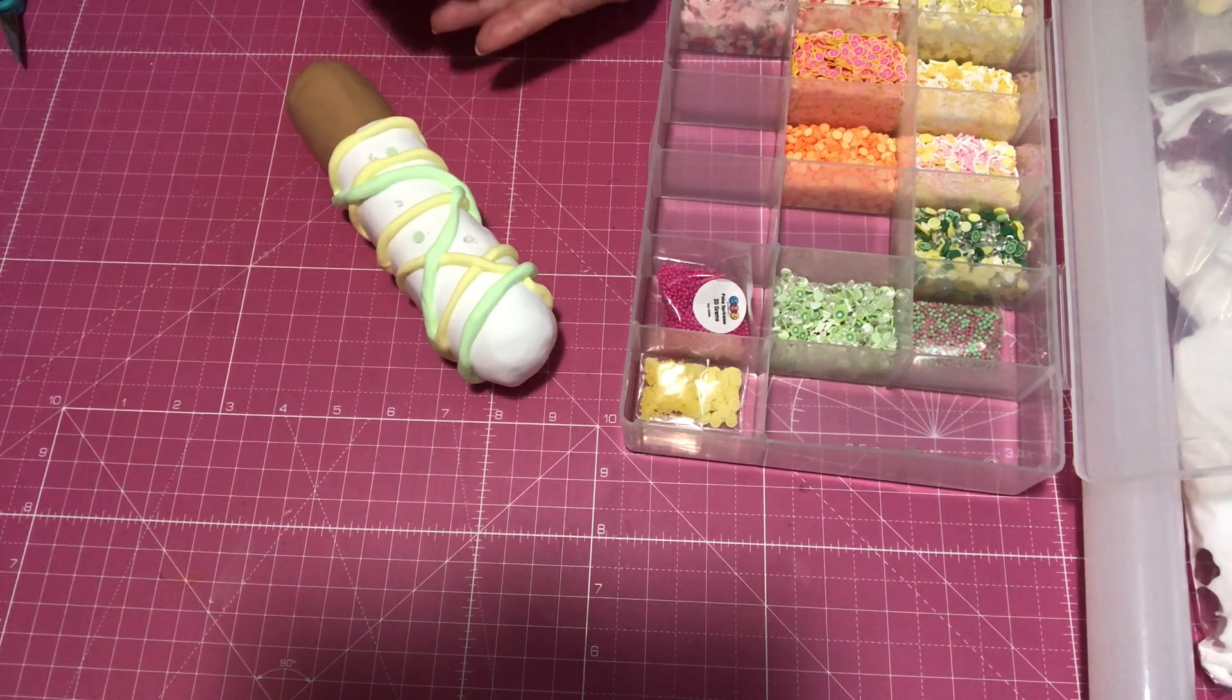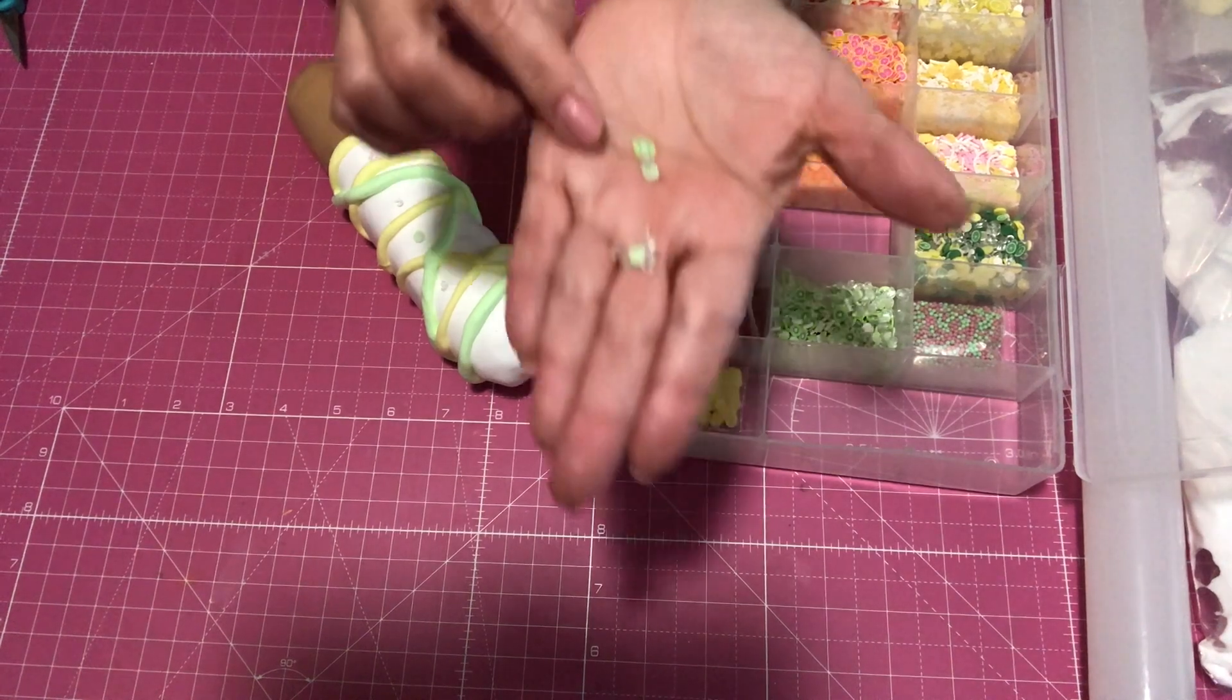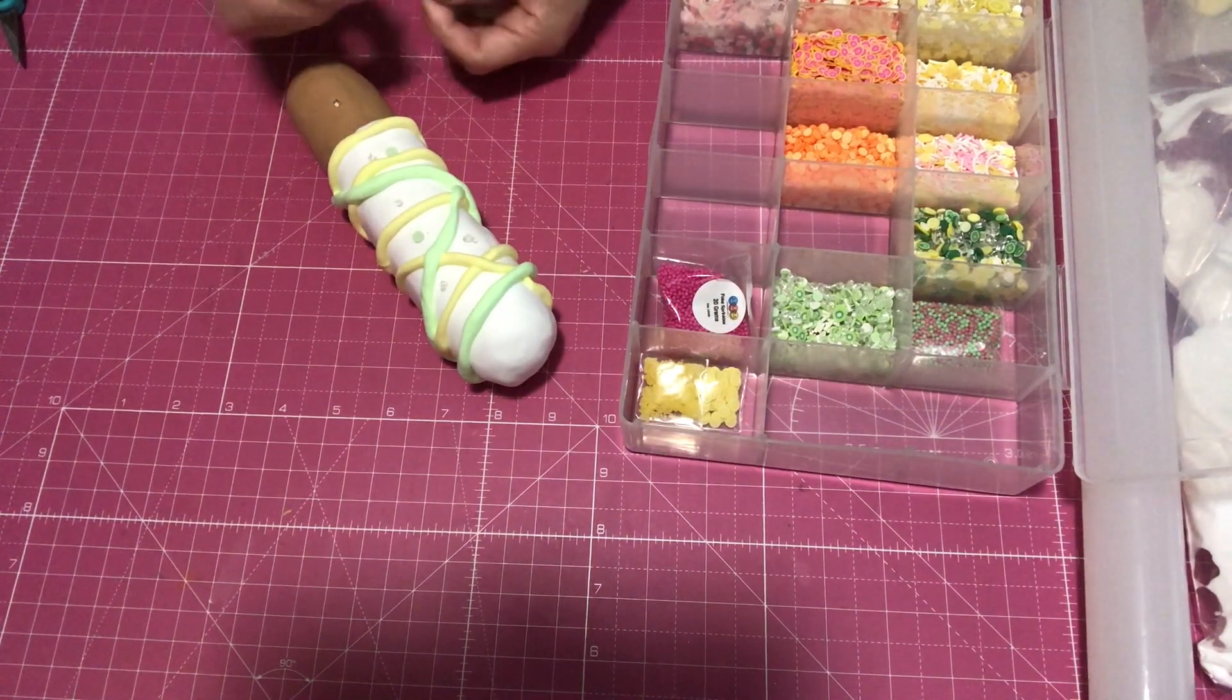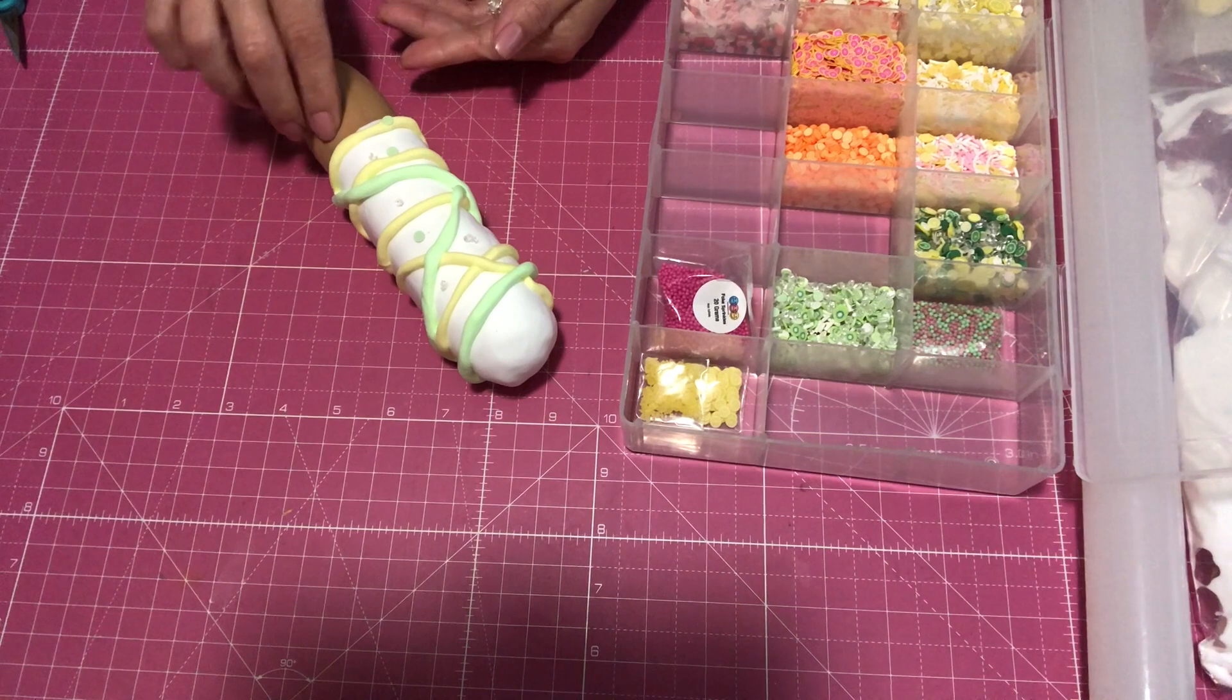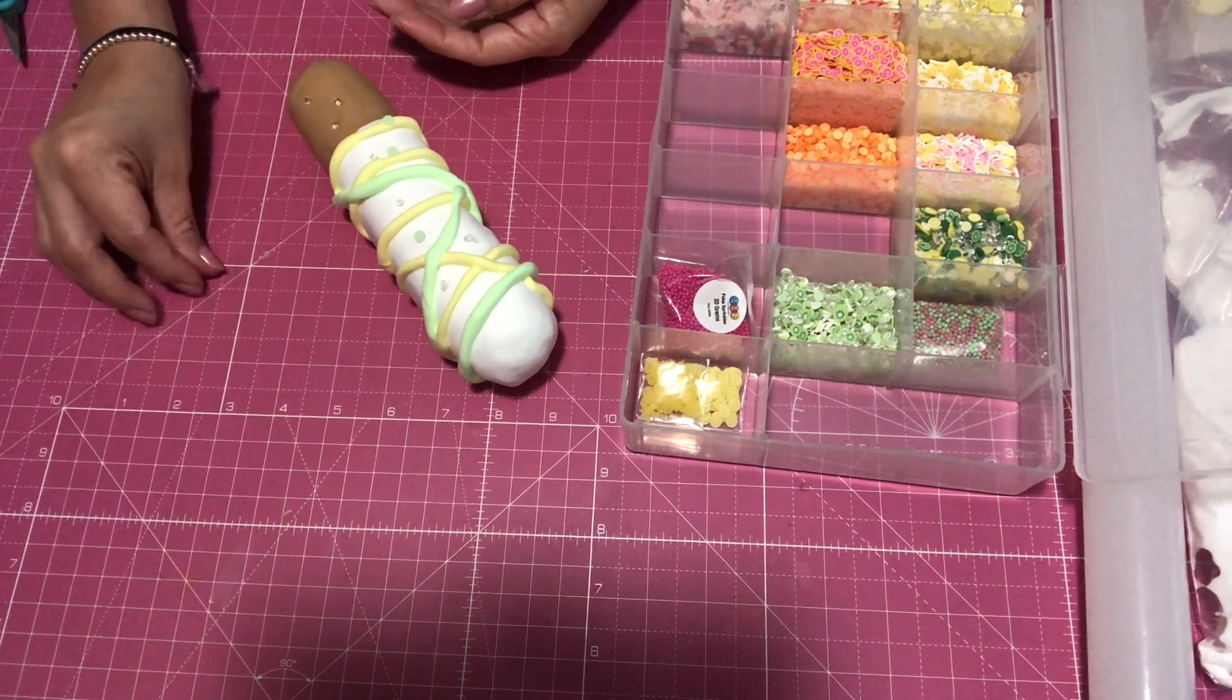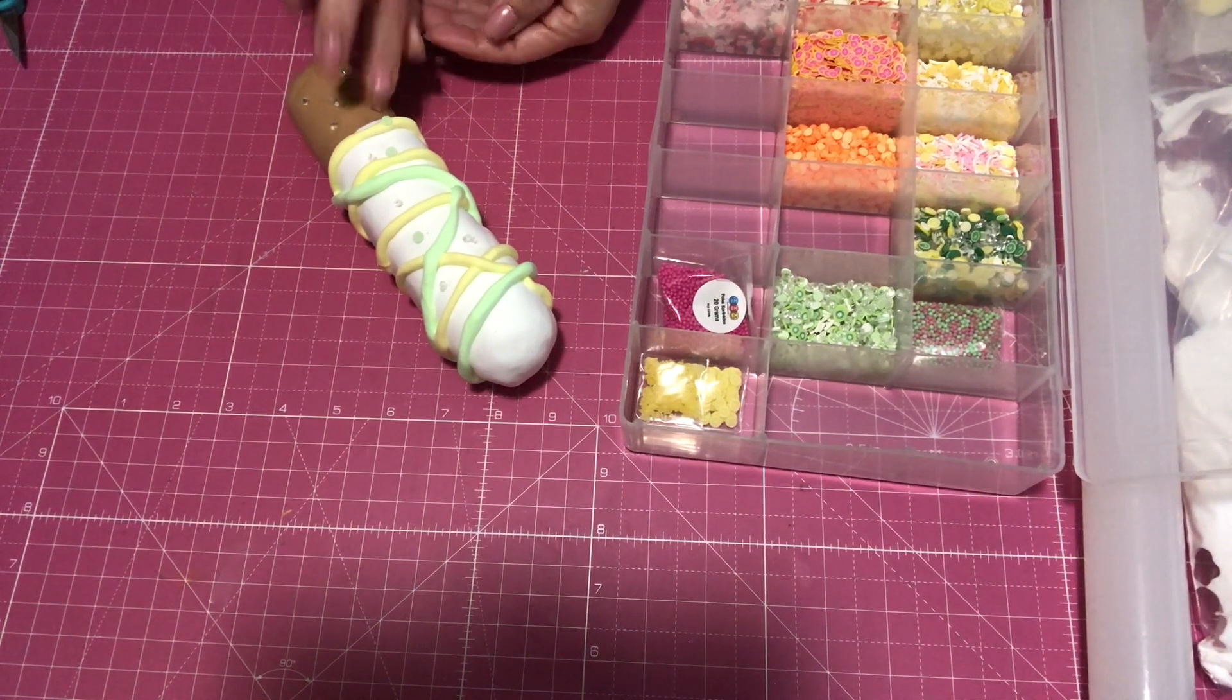Very easy, all I'm doing here is first I actually added some glue because I want to make sure that my sprinkles hold. By the time I got up to the sprinkles my clay was somewhat dry. When you add your glue you want to make sure that you use a paintbrush and just even out the glue.